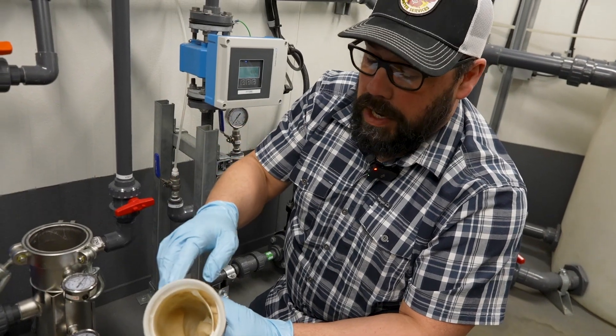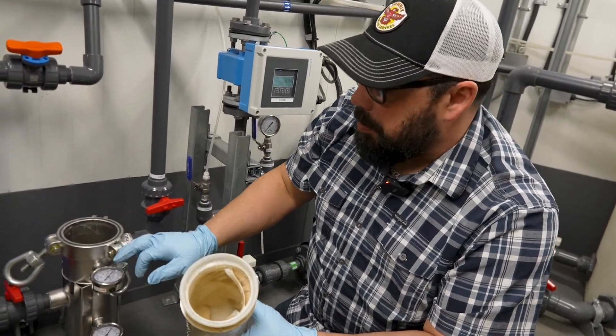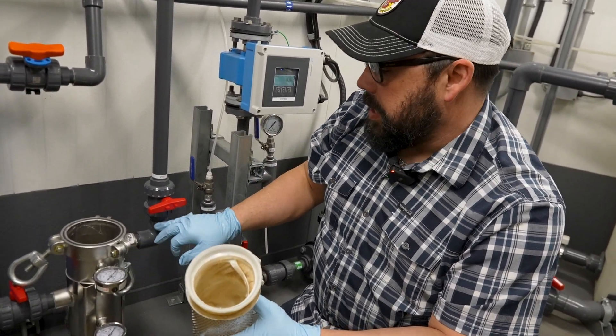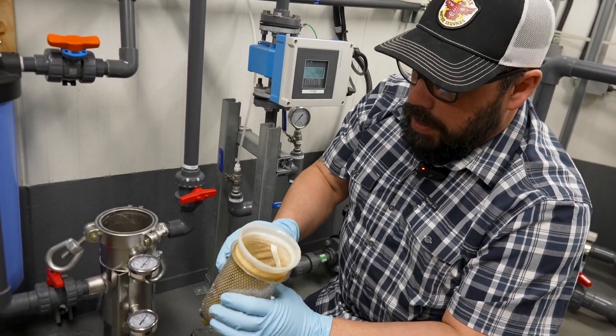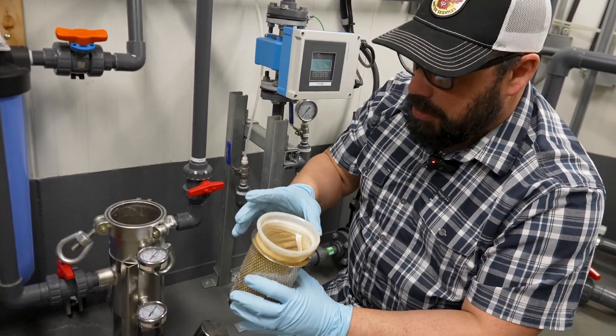Now all your sands and gravels will get stopped in there, and once it's getting plugged up your pressures will start to climb on your inlet side and decrease on your outlet side. And then once you get between 10 psi it's time to change this.